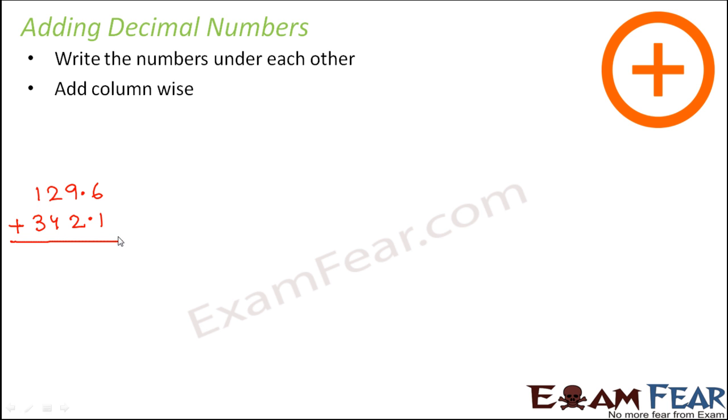When you add them column-wise, basically the digit which is located at the tenths place, so this is the tenths place, this is the ones place, this is the tens place, this is the hundreds place. Just position the numbers in such a way that the tenths place digits are one under another, similarly ones place digits are one under another, and then you add them column-wise.